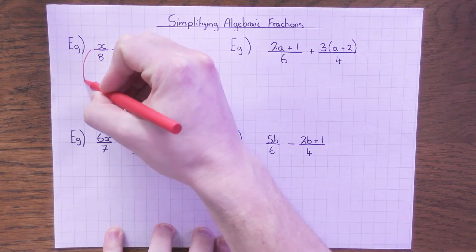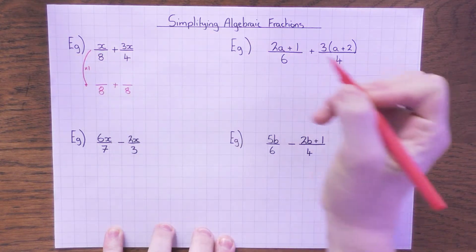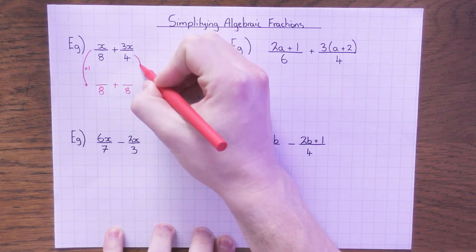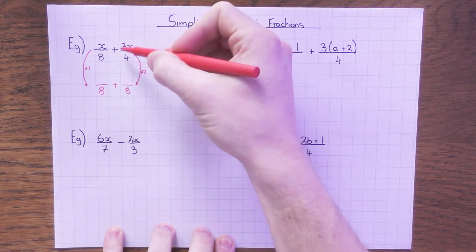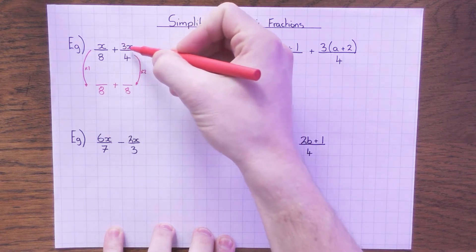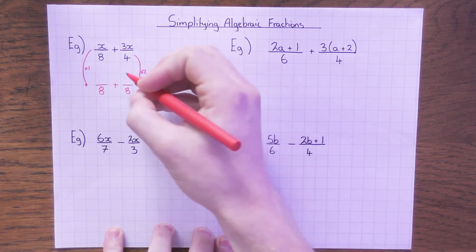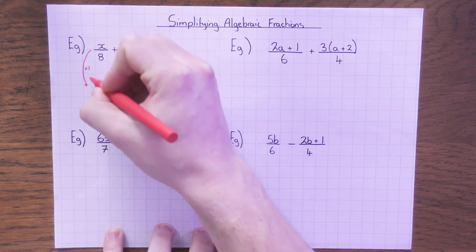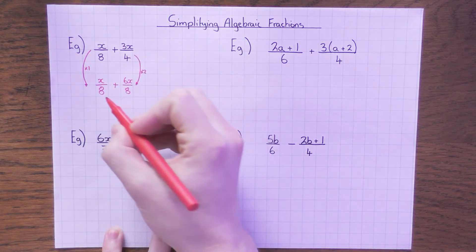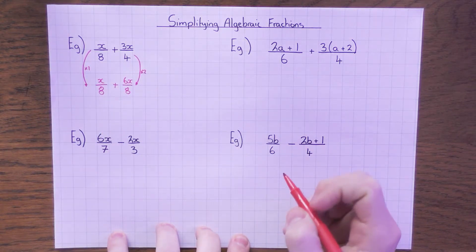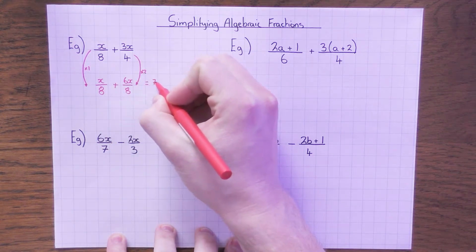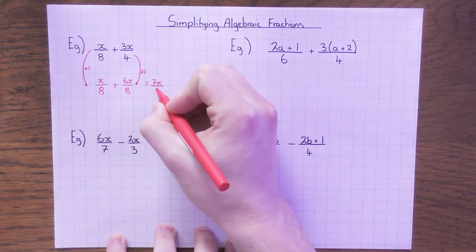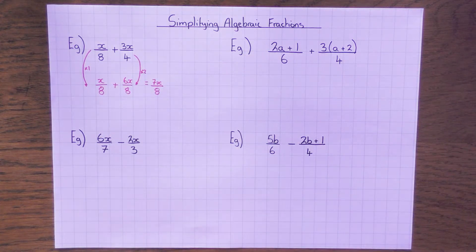What do I do to 8 to get to 8? I just times it by 1. What do I do to the 4 to get to 8? I times it by 2. So to keep this fraction equivalent, I need to also times the top by 2 as well. So 3x times 2 is 6x, and x times 1 is just x. Now my denominators are the same, I can add the numerators. x plus 6x is 7x, and my denominator stays as 8. It's exactly the same rules as if I was adding normal fractions.